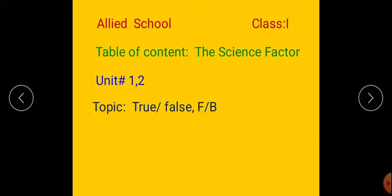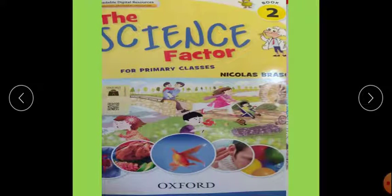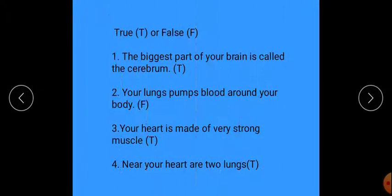This is the 12th lecture of your Science Factor book, Unit 1: The Human Body and Unit 2: The Animal World. Today we are going to do true, false, and fill in the blanks of these two units. For a true sentence you have to write T, and for a false sentence you have to write F.